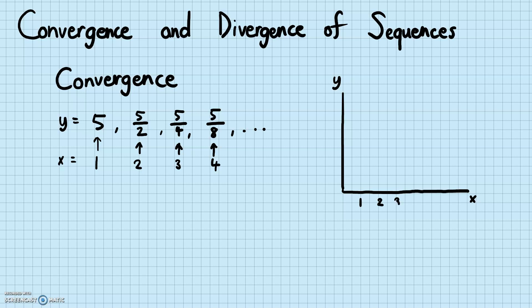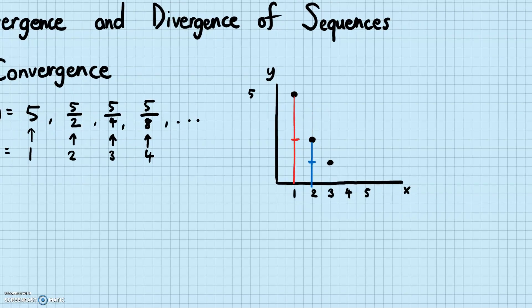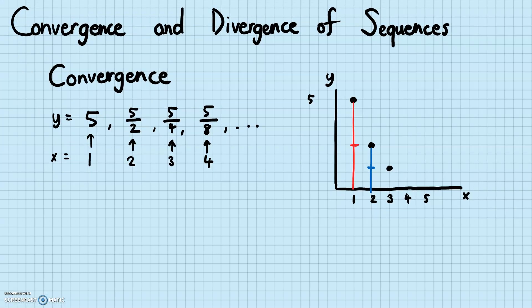Marking one, two, three, four, five on the x-axis. At one, it's five. At two, it's half of five, so five-halves, right there. At three, it's going to be half of that — five-fourths. Five-eighths is going to be half of five-fourths. And then you can kind of see the pattern — it's becoming closer and closer.